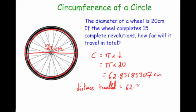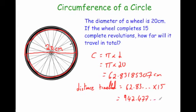The distance travelled equals 62.83... (don't round early to preserve accuracy) times 15. Multiplying by 15 gives 942.477 centimetres, which rounds to 942.5 centimetres to one decimal place. So that's how far the wheel travels in 15 complete revolutions.